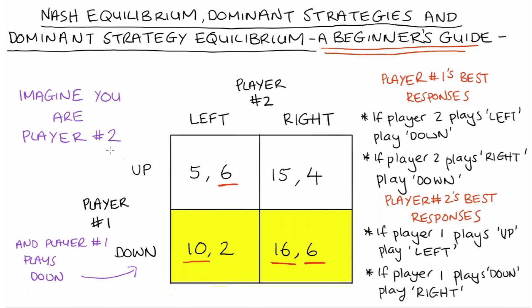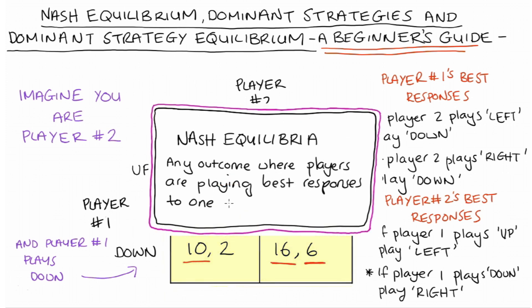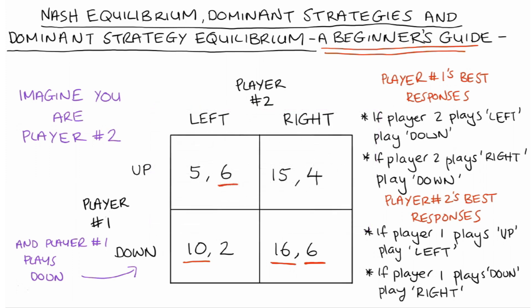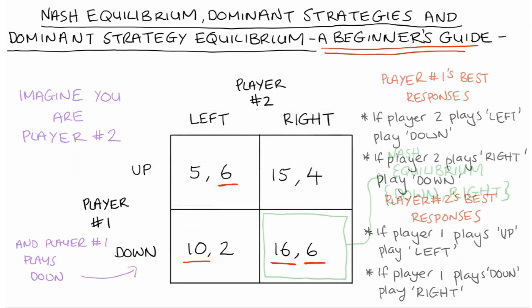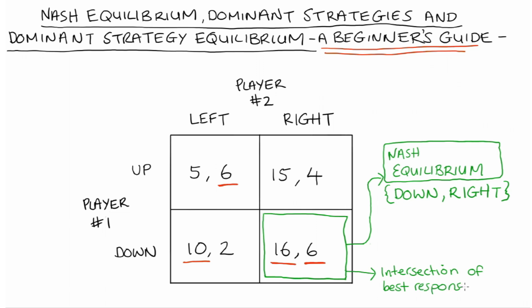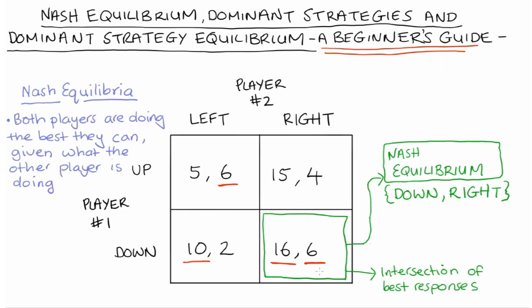A Nash equilibrium will be any outcome where both of our players are playing best responses to one another — we're looking for an intersection of best responses. Visually, we're looking for any cell with two underlines in it. You can see the Nash equilibrium in this game is where player one plays down and player two plays right. This is a special outcome and one solution concept for this game because if our players are playing best responses to one another, they're both doing the best they can given what the other player is doing — it's a place of stability where no one has a reason to change their behavior.